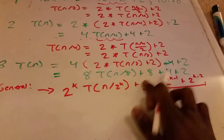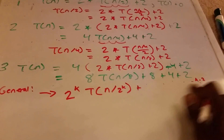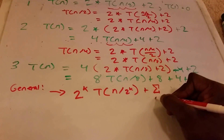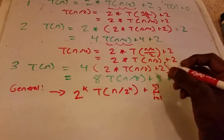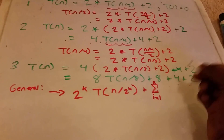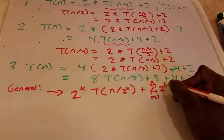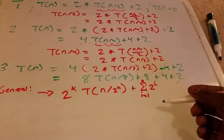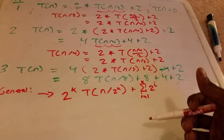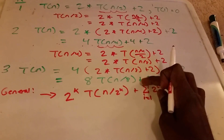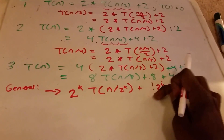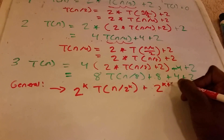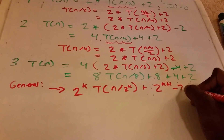We can rewrite this as a summation: the summation from i equals 1 to K of 2^i. If you know your summation formulas, you know that this becomes 2^(K+1) minus 2.